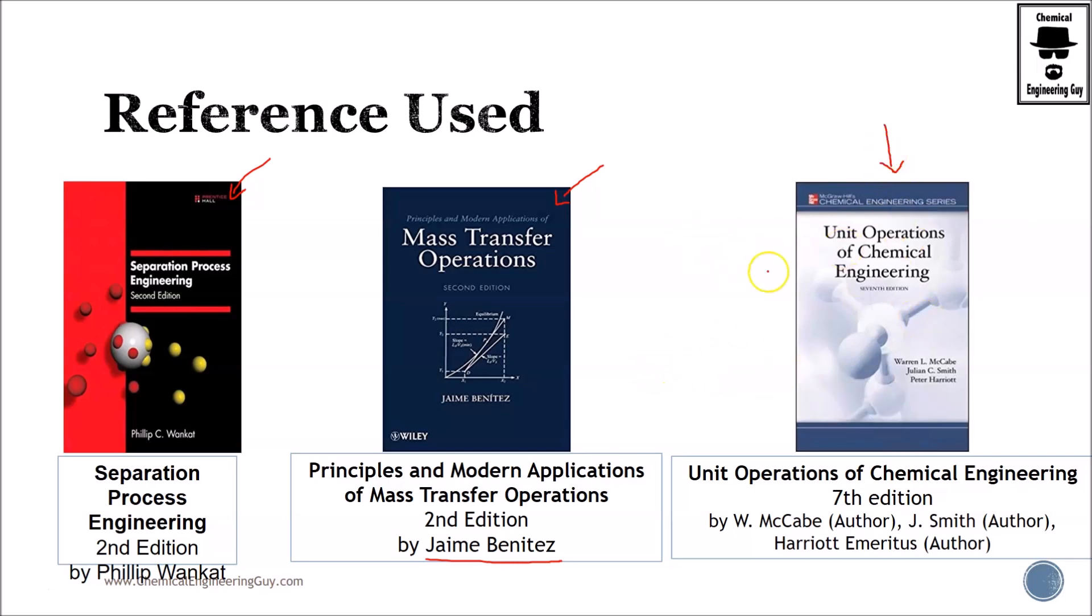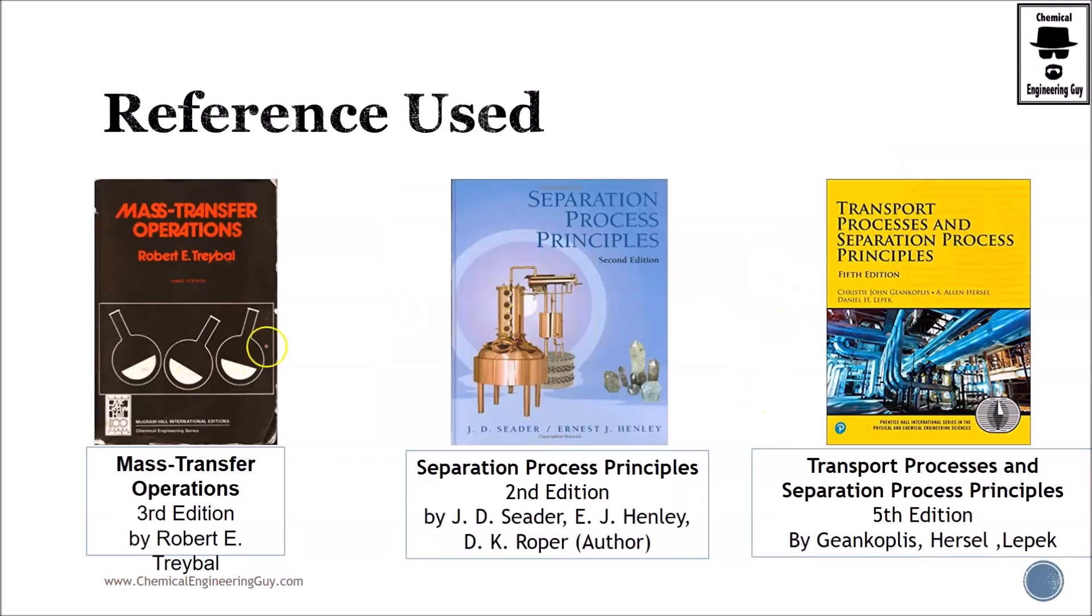This is a classical book for chemical engineers. I would definitely recommend it to buy. It's Unit Operations of Chemical Engineering by McCabe, Smith, and Harriet. It has plentiful theory on thermodynamics, heat transfer, momentum transfer, and mass or process separation technologies. It's a must-have for chemical engineers.